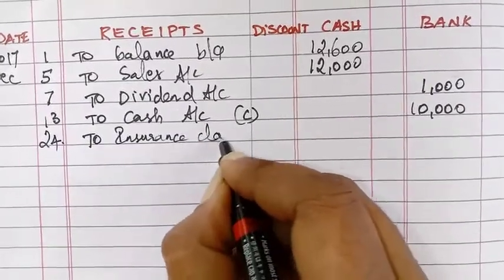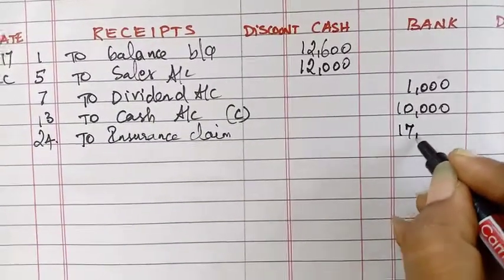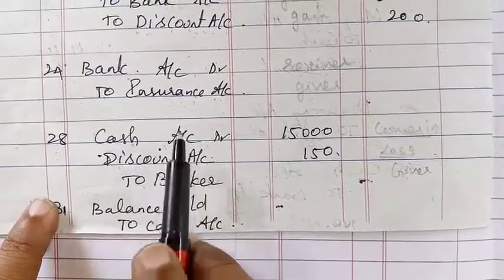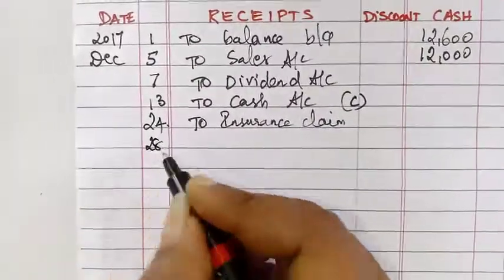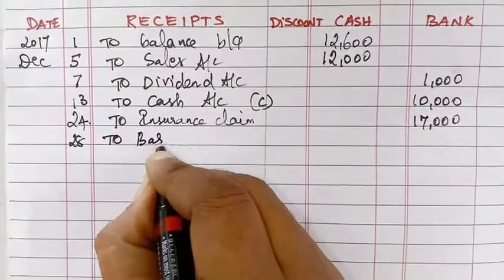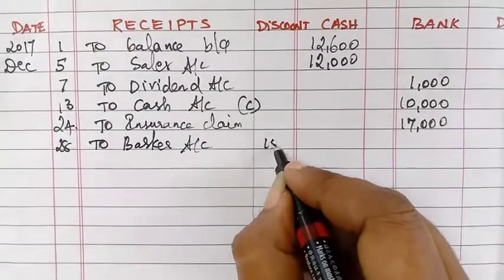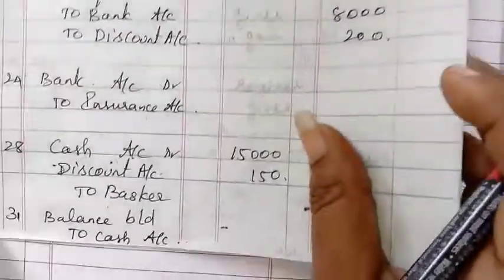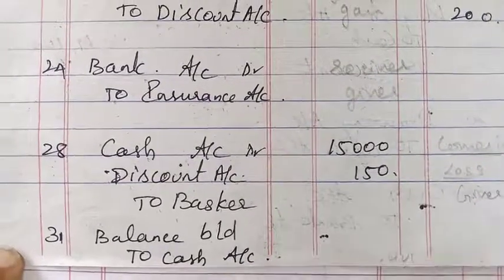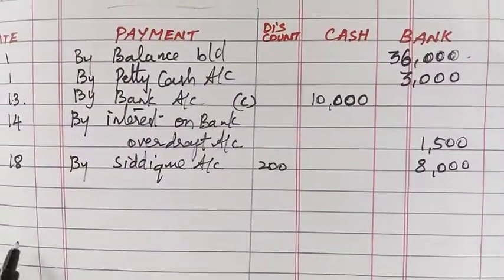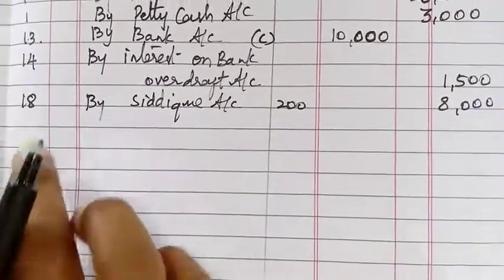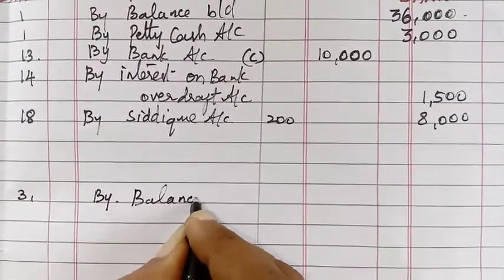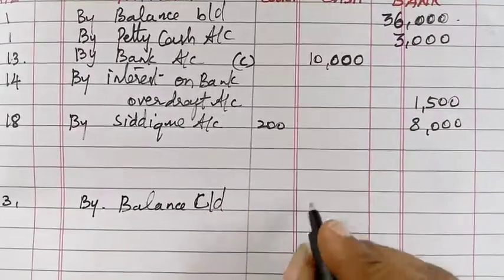Next, 28th date: cash — debit side. Write 28 date, write 'To Baska Account', discount 150, cash 15,000. Next, 31st date: cash credit side — write 31 date, 'By Bank Account', and write 'By Balance Carry Down' 18,600. First number tally.